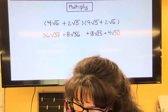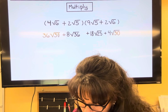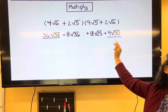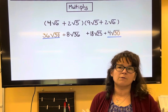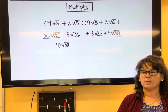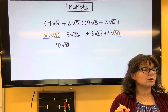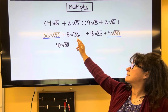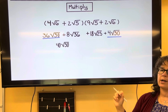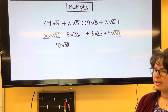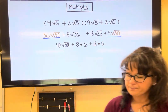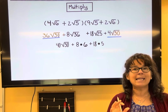From here, I'll identify like terms. The 36 root 30 and the 4 root 30 are like terms, so 36 roots of 30 plus 4 more roots of 30 gives us 40 roots of 30. Then, root 36: 36 is a perfect square, so root 36 equals 6. And root 25: 25 is a perfect square, so root 25 equals 5. So we have 8 times 6, plus 18 times 5, plus 40 root 30.